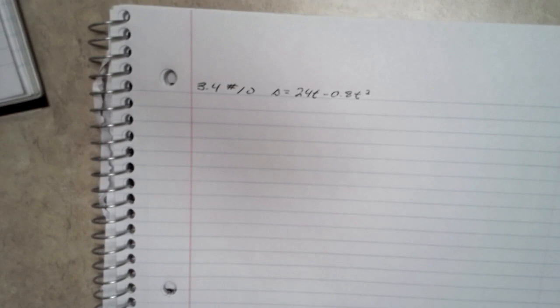The problem asks: A rock growing vertically upward from the surface at a velocity of 24 meters per second reaches a height of s equals 24t minus 0.8t squared meters in t seconds. The question has five parts to it.